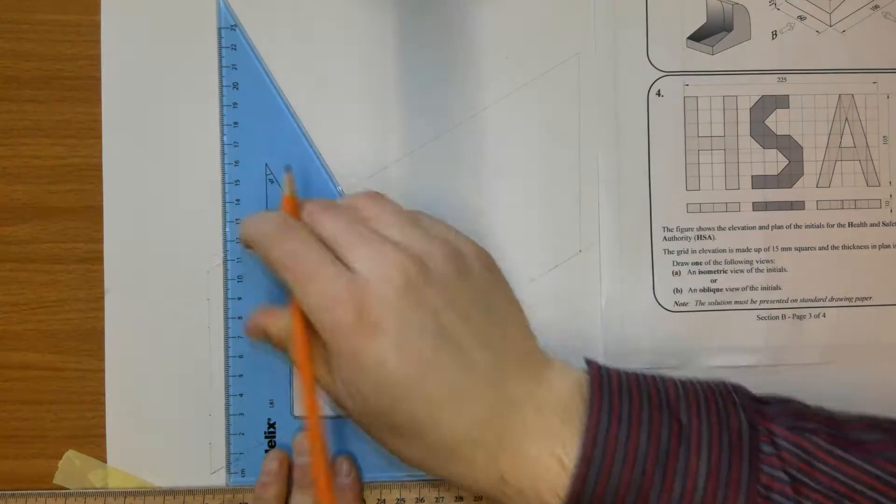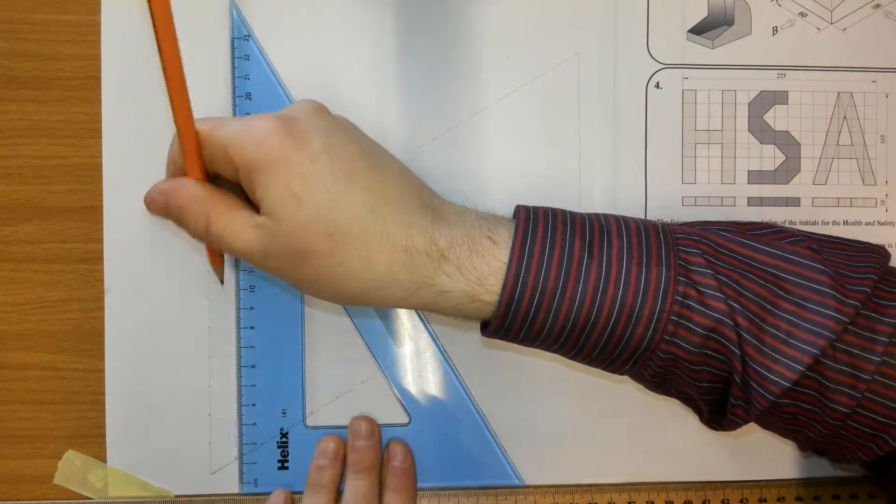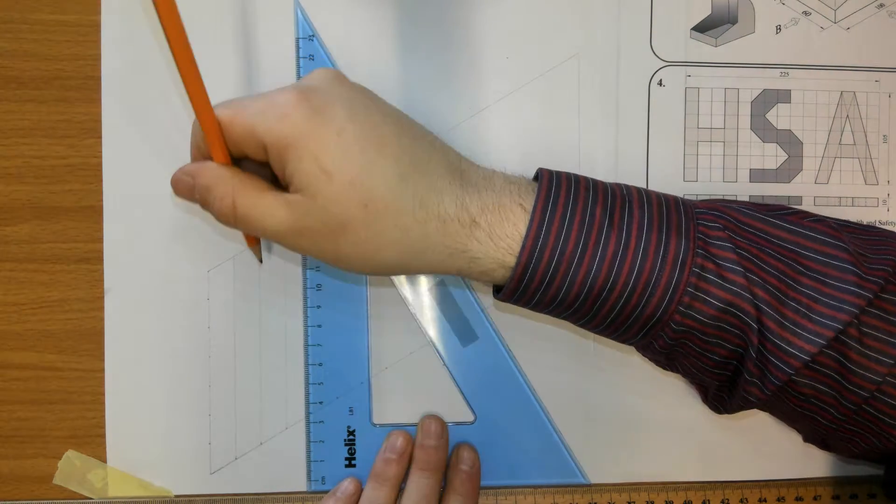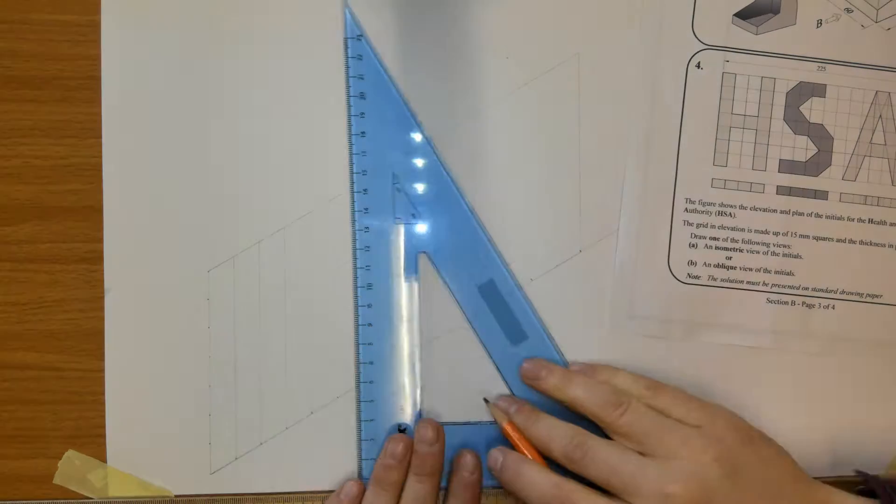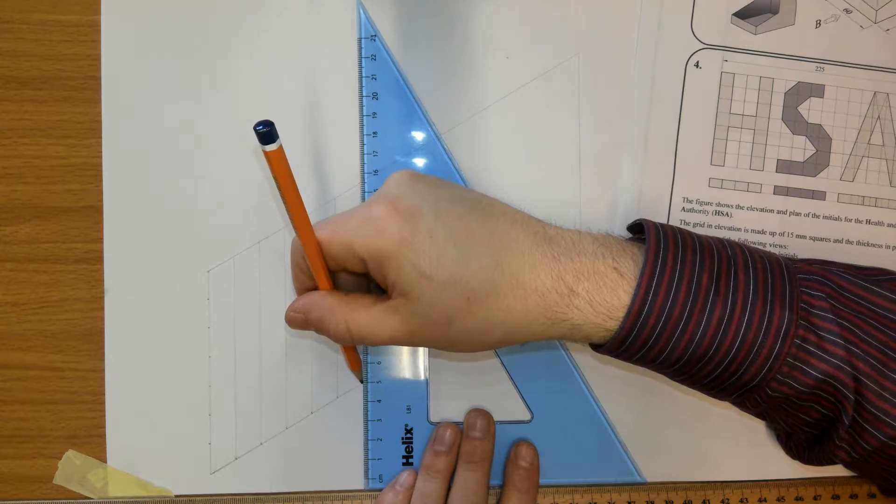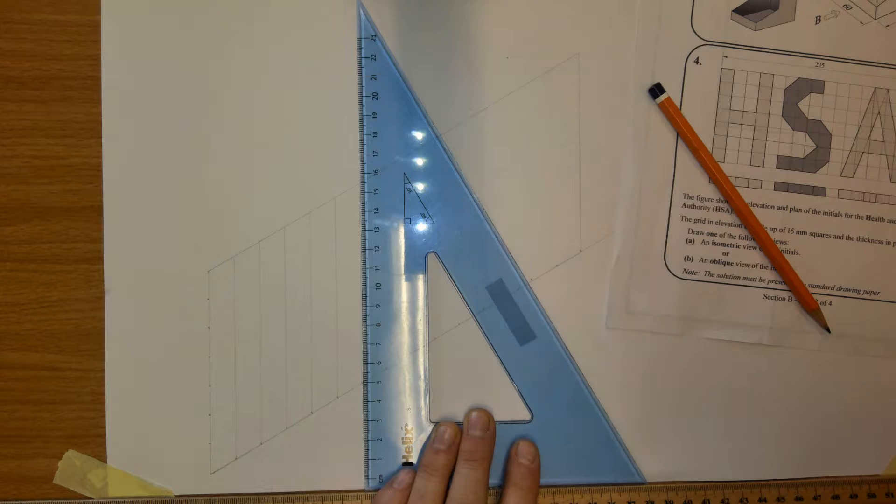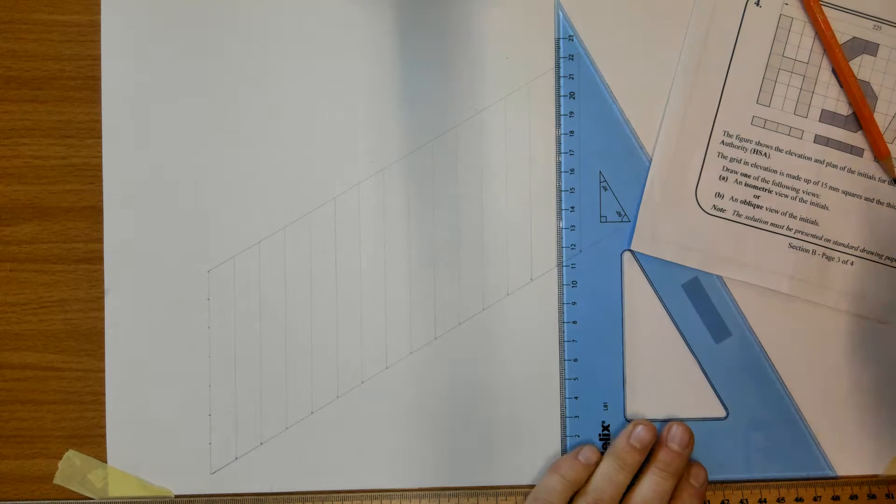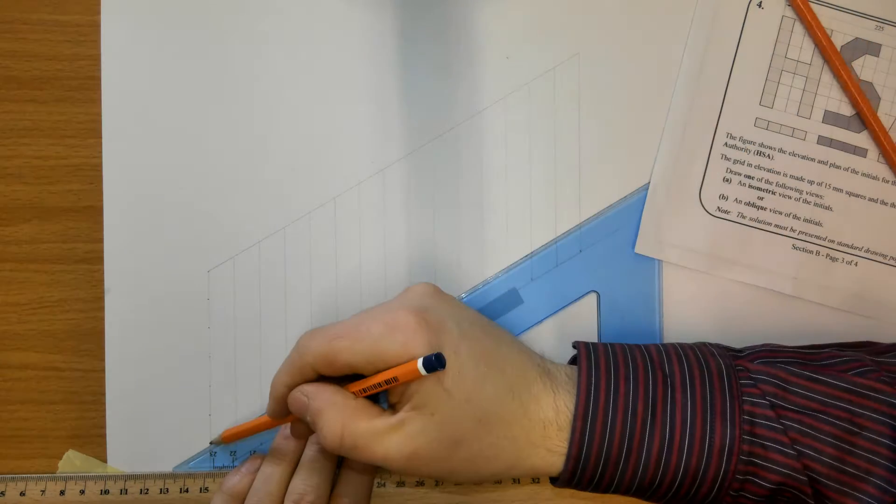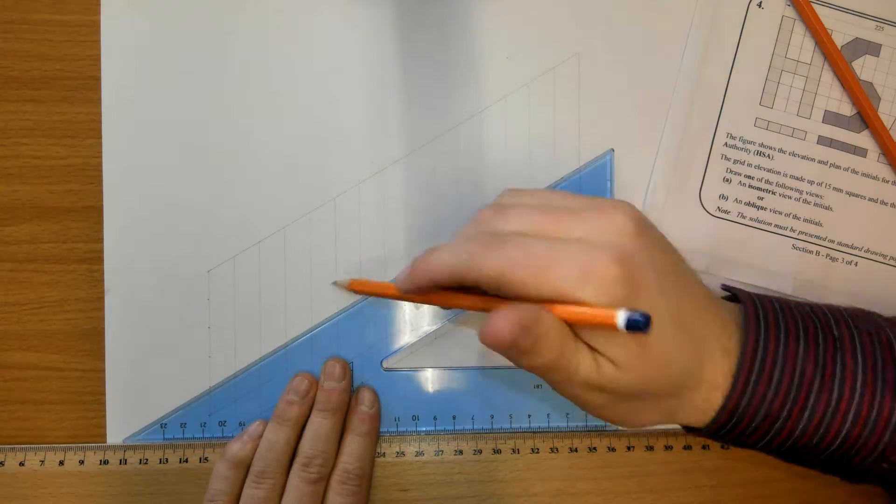We're going to draw the lines up vertically. I'm going to pause this video and do that, then we'll do the ones horizontally. Notice that's done - we can do the ones that represent the horizontal lines. Remember, in isometric, horizontal lines are drawn at 30 degrees.